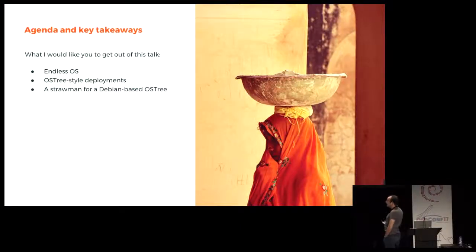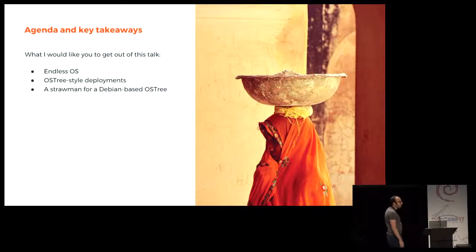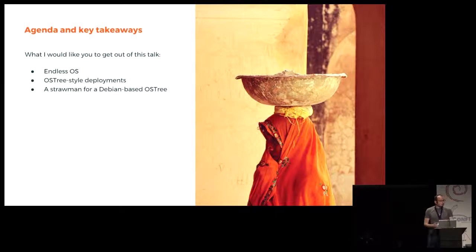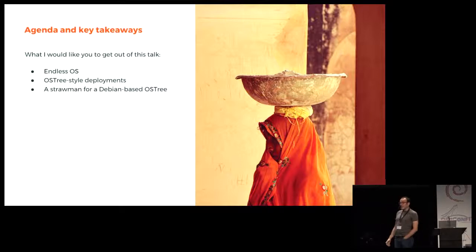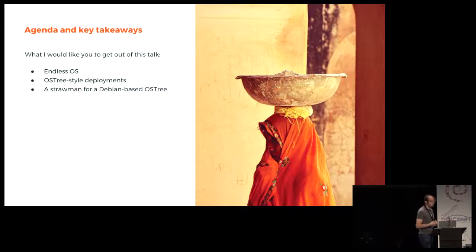Basically three things I would like you to get at the end of this talk. First, what Endless OS is if you don't know what it is. Second, what is OSTree and how to deploy a Debian filesystem tree using OSTree. And then finally, I have a super modest straw man for how Debian can adopt OSTree a little bit more and why that would be useful to a bunch of people.